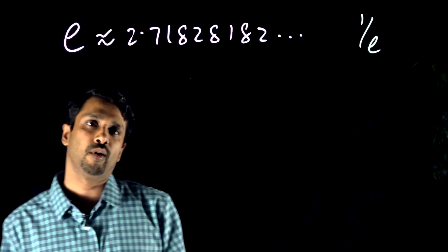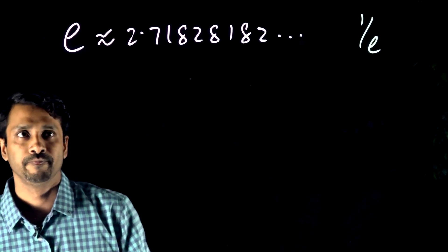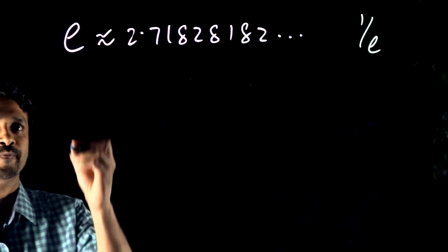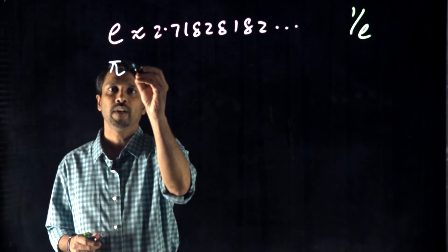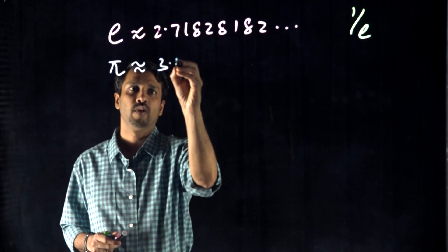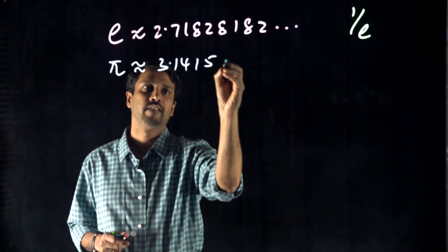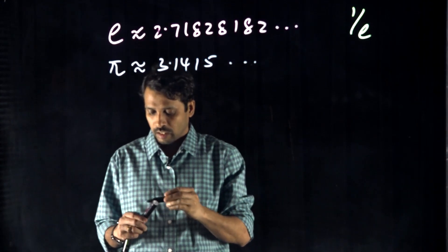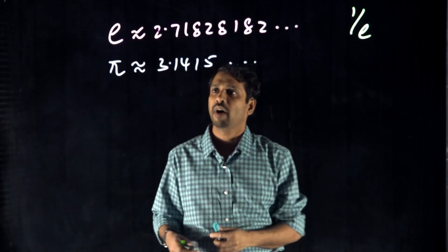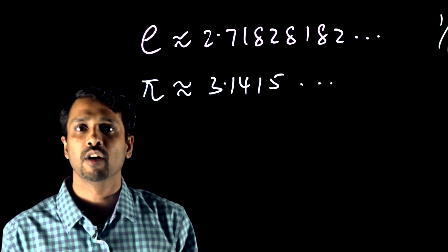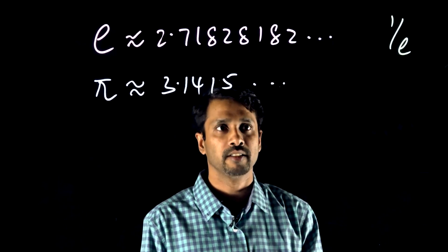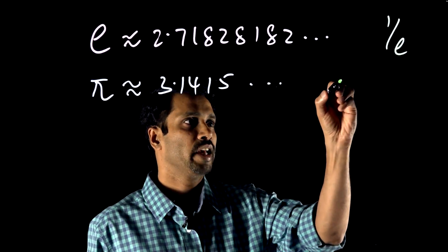What's the next important number? How about pi? So what is pi? Pi is 3.1415 and so on. How do you understand the meaning of pi? Let's look at this situation — I'm going to draw a square.